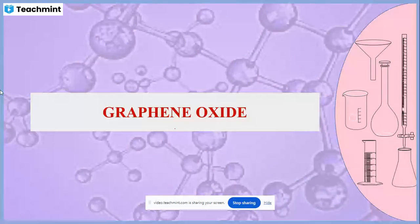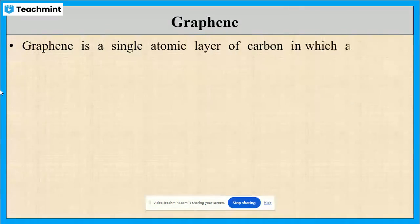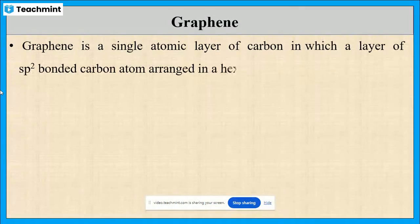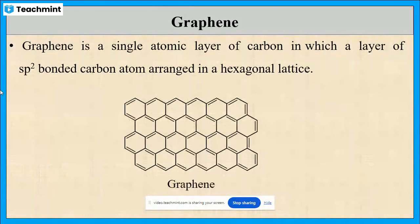In this session, let us discuss about graphene oxide. Before that, let us see what is graphene. It is a single atomic layer of carbon. Each layer of sp2 bonded carbon atoms is arranged in a hexagonal lattice, and this is the structure of graphene.